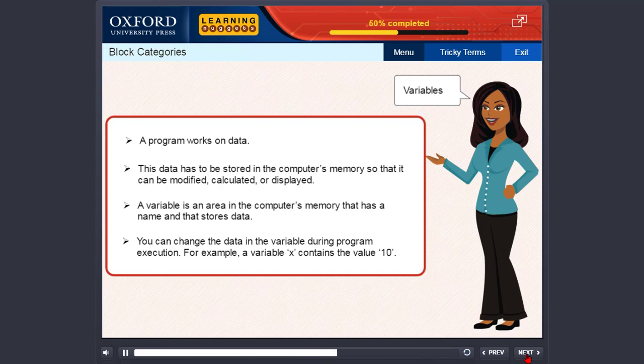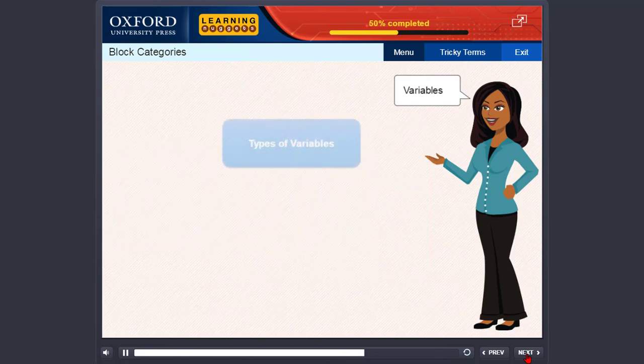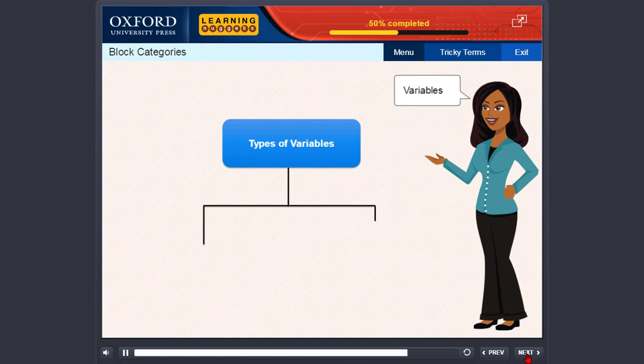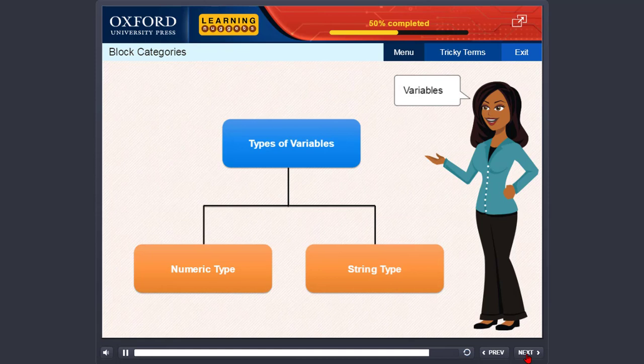For example, a variable x contains the value 10. The type of a variable depends on the type of data it can store. The main types of variables are numeric type and string type. Click on each type to know more about them.